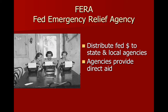Here are some examples of New Deal alphabet agencies. FERA, the Federal Emergency Relief Agency, was created to distribute federal money to state and local agencies, which would then provide direct aid. A great example is federal money going to Pennsylvania, and Pennsylvania giving some of that money to the YMCA. The YMCA could then feed, clothe, and even house people in need. This is direct relief — direct aid through state and local agencies, federal dollars being spent at the local level.